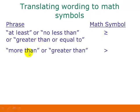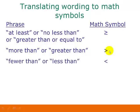If we have 'more than' or 'greater than,' that translates into just a greater than symbol, meaning the actual value is not included because there's no equal sign. Similarly, 'fewer than' or 'less than' translates into a less than symbol, and again, the value itself is not included.